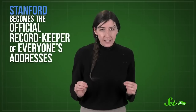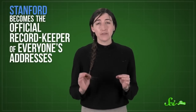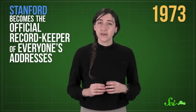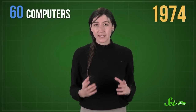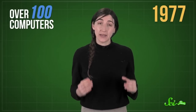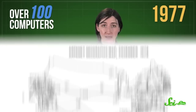So ARPANET's engineers scrapped that system and selected Stanford as the official record keeper of everyone's addresses in 1973. This quick fix let ARPANET keep growing through the 70s, with 60 computers in 1974 and over 100 by 1977. Soon, satellites connected California and Hawaii, stretching ARPANET to what had been one of the most isolated places in the world. Then ARPANET jumped across the pond, extending the network to England and Norway.